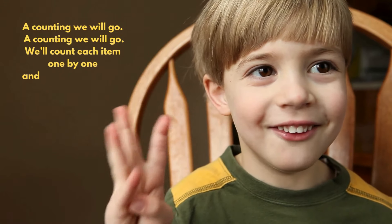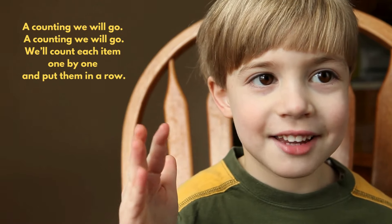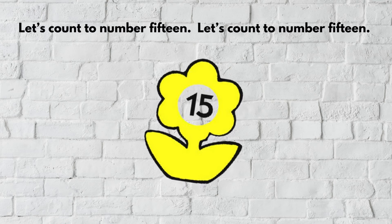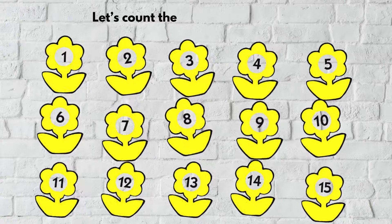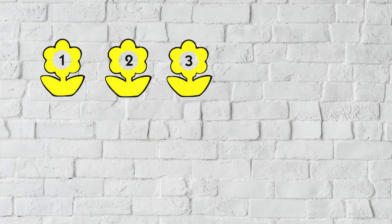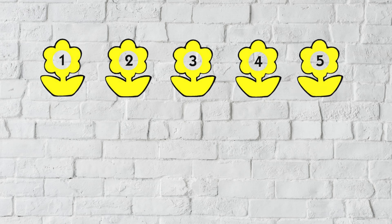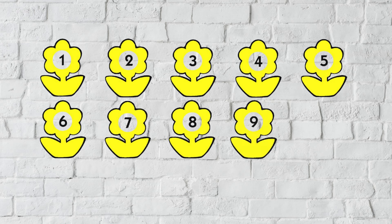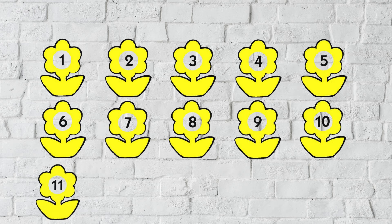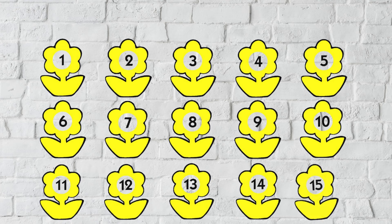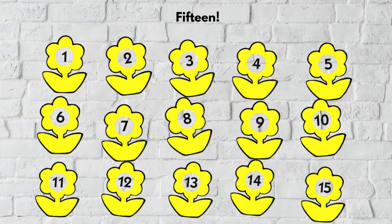A-counting we will go, a-counting we will go, we'll count each item one by one and put them in a row. Let's count to number fifteen, let's count the flowers up to fifteen: one, two, three, four, five, six, seven, eight, nine, ten, eleven, twelve, thirteen, fourteen, fifteen.